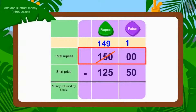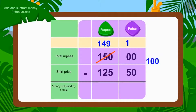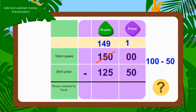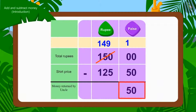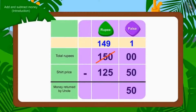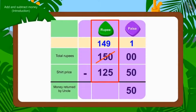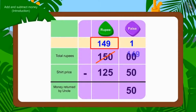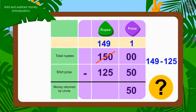Now, if we subtract 50 paise of Rs. 125.50 from the borrowed 100 paise of Rs. 150, then how many paise are left? That's right — 50 paise. Now we will subtract the number of rupees: Rs. 149 minus Rs. 125 equals Rs. 24.